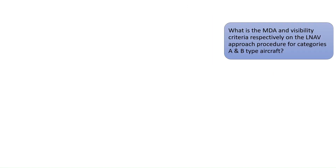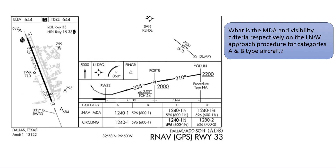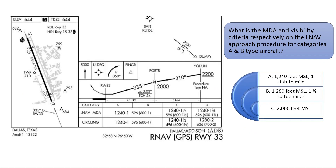What is the MDA and visibility criteria respectively on the LNAV approach procedure for categories A and B type aircraft? In the bottom of the chart, we can see the landing minimums for the LNAV and circling approaches on the RNAV GPS approach for category A and B aircraft. The minimum descent altitude is 1,240 feet MSL and the minimum visibility requirement is one statute mile. The correct answer is A.